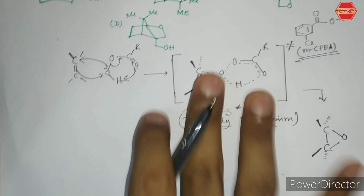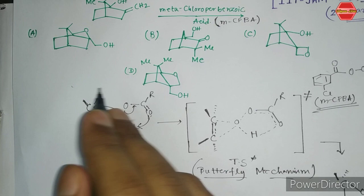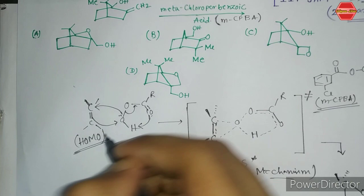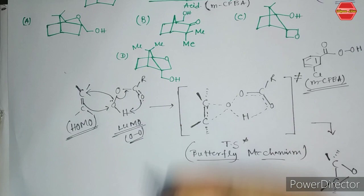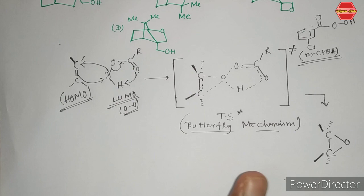The reaction is initiated by the transfer of electrons from the alkene's HOMO — the highest occupied molecular orbital — into the sigma-star orbital of the oxygen-oxygen bond, which is weak in nature. So the LUMO of this oxygen-oxygen bond of the peracid is involved.